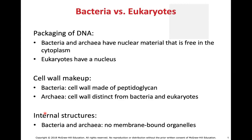The cell wall in bacteria is made up of peptidoglycan — a term we saw in chapter one. If you break this word down, peptide means proteins and glycan means sugars. The archaea will have cell walls that are distinct from bacteria and eukaryotes as well.